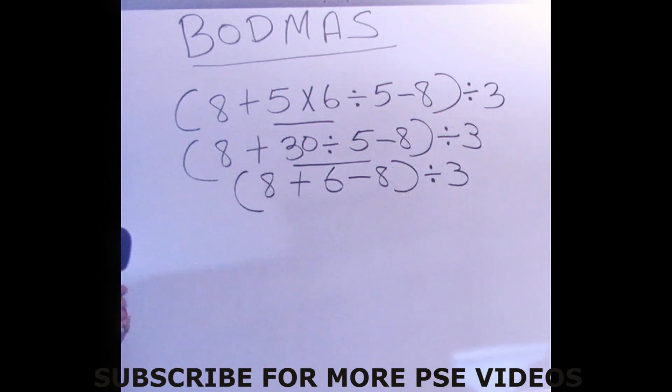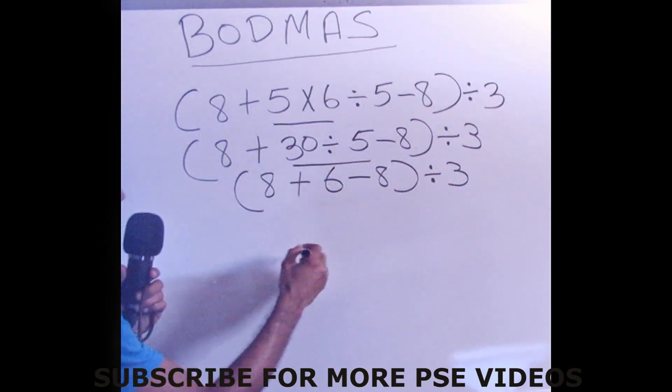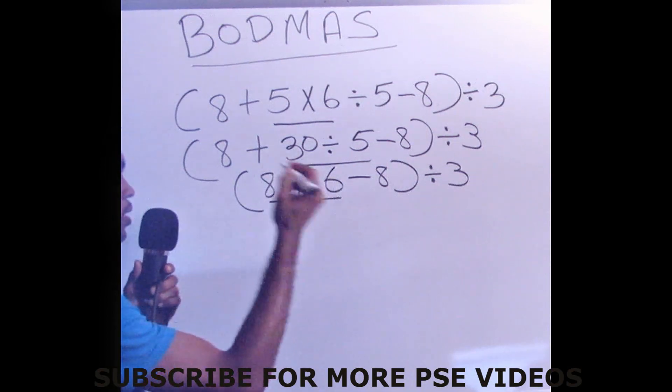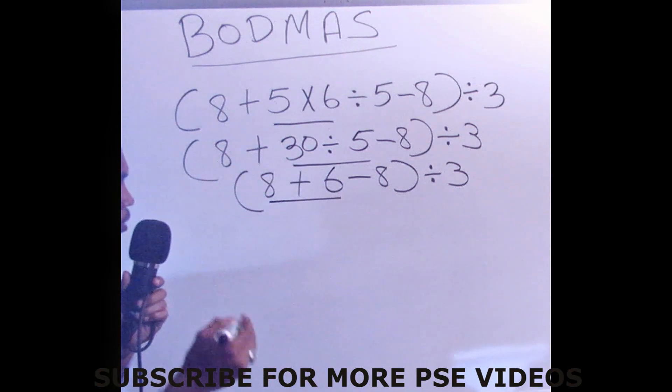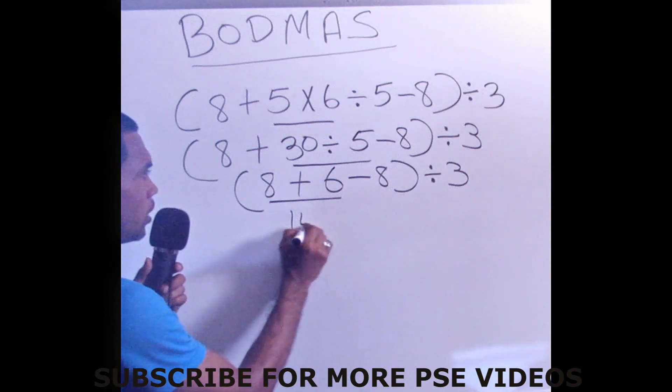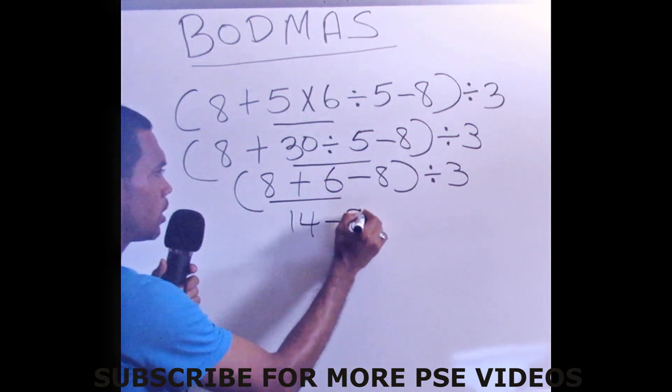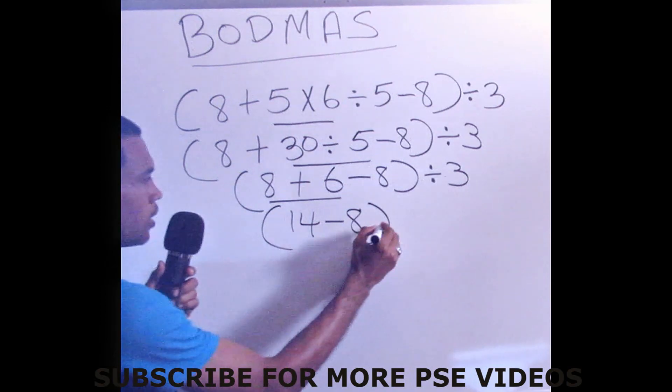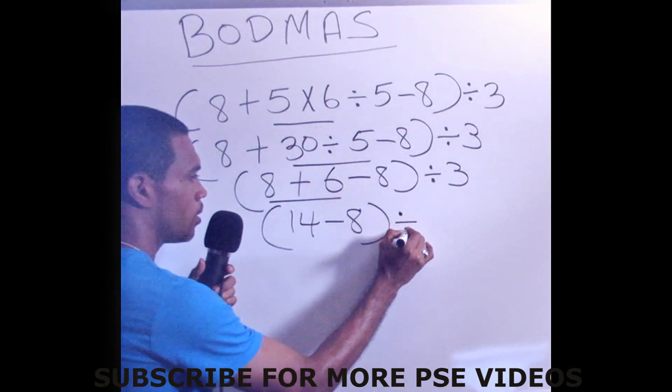So we're still working whatever is in the bracket. And in bracket, we have 8 plus 6 minus 8. Remember addition and subtraction, whichever one comes first, you just solve it. And 8 plus 6 is 14 minus 8. You close bracket, divided by 3.